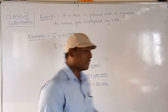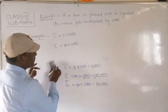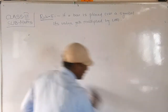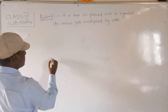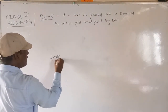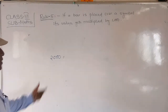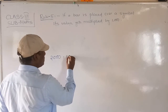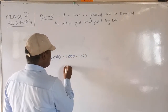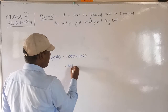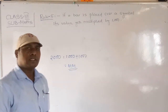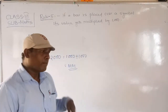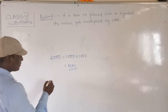Now, whenever you write 2000, for example, if asked to write 2000 in Roman numbers — 1000 is written as M, so 2000 means 1000 plus 1000, which is written as MM. And 3000 would be 1000 plus 1000 plus 1000, written as MMM.